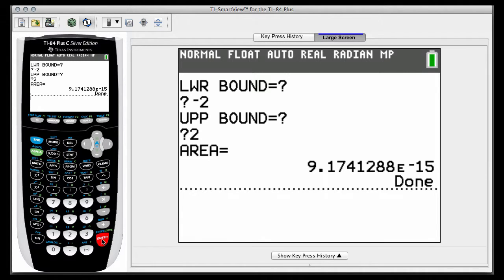That obviously is scientific notation. You're 9.174 times 10 to the negative 15th, essentially 0. So the calculator does not realize that the functions have switched places. That's really what happens. It's almost thinking of this as a positive area and a negative area offsetting each other.